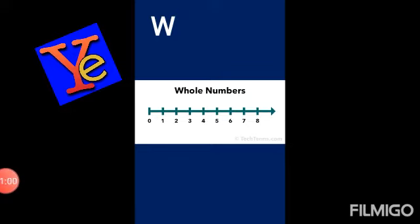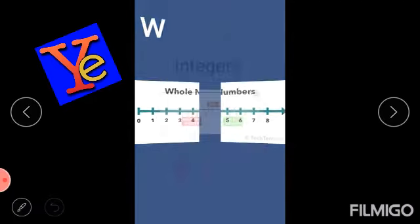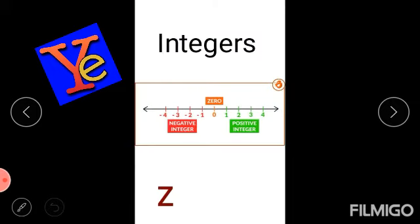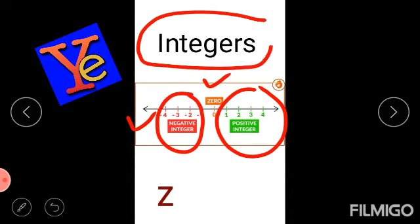Next are integers. Integers are those numbers which include zero as well as negative numbers. It means the set of numbers having positive numbers, negative numbers, as well as zero. This whole set is called integers, and we denote integers by Z.